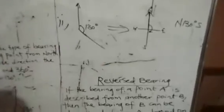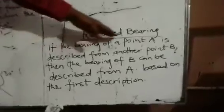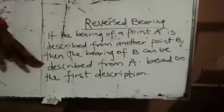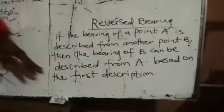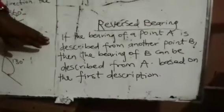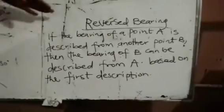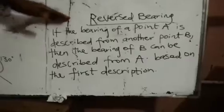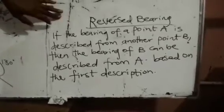We also have the reverse bearing. If the bearing of a point A is described from another point B, then the bearing of B can be described from A based on the first description. We have some examples, but I would like to take those examples in our next class. Thanks for listening.